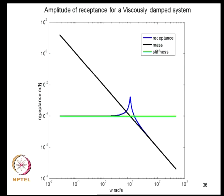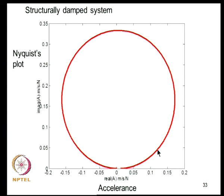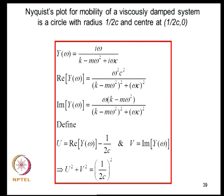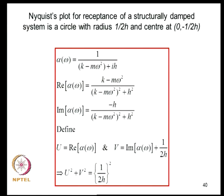Another observed feature is that FRFs in the Nyquist plot tend to appear as circles. For a viscously damped system, the mobility Nyquist plot can be shown to be a circle of radius 1/(2C) centered at a specific location. This provides a method for measuring damping experimentally: plot mobility as a Nyquist plot and measure the radius to deduce the damping. Similarly, for a structurally damped system, the receptance Nyquist plot is a circle with radius related to H — the imaginary part of the complex stiffness associated with energy dissipation.